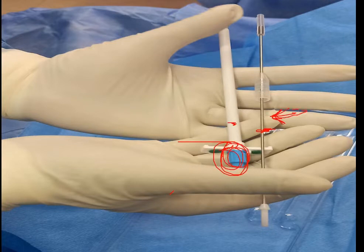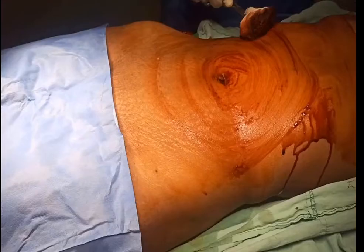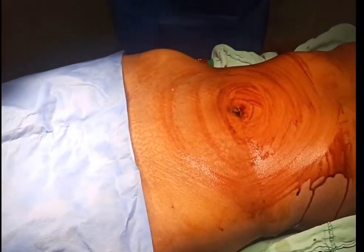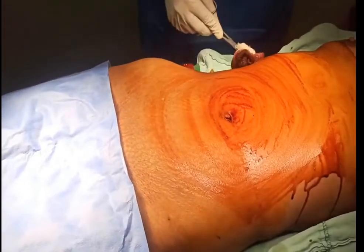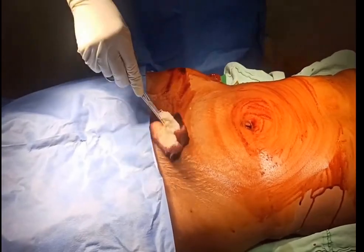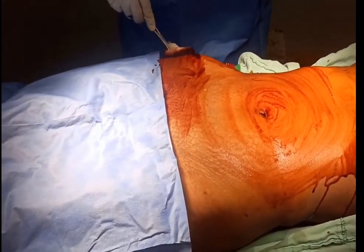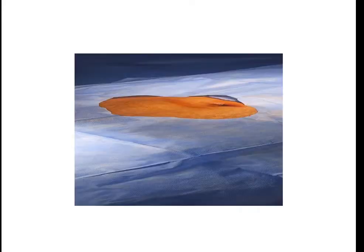The first step is to clean the abdomen — first with betadine, then with spirit. Here is a representative clip showing how to clean in a rotational motion. The entire abdomen, down to just above the pubic symphysis, has to be cleaned thoroughly. The entire area is then covered with a sterile sheet.